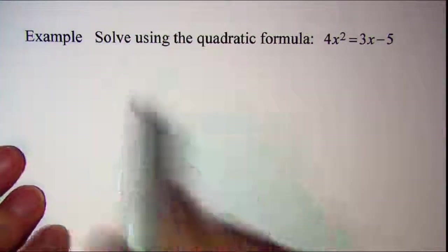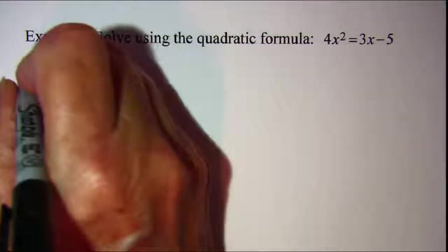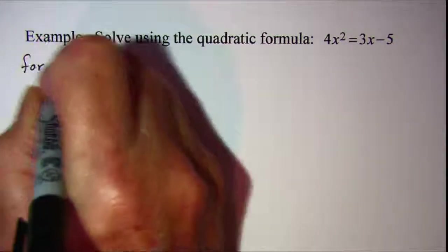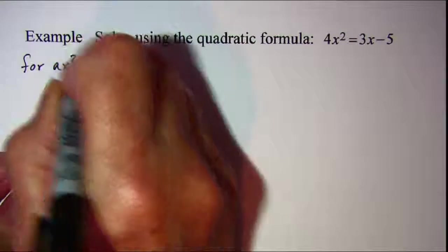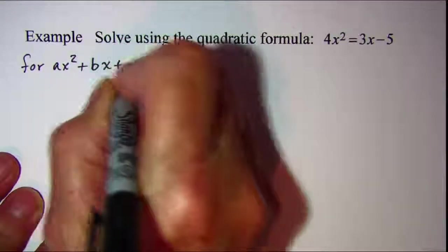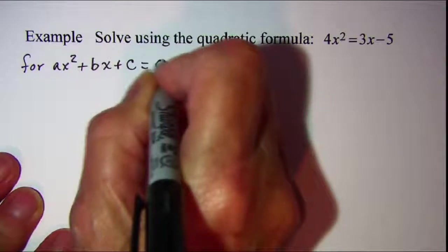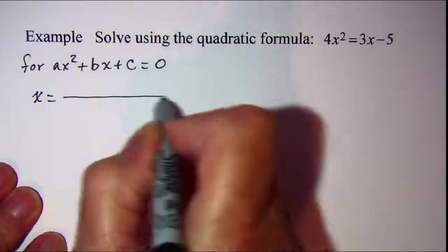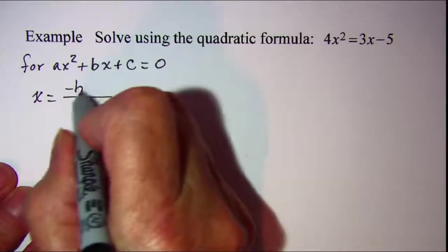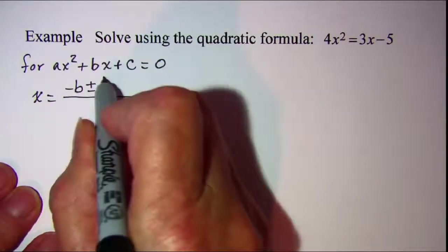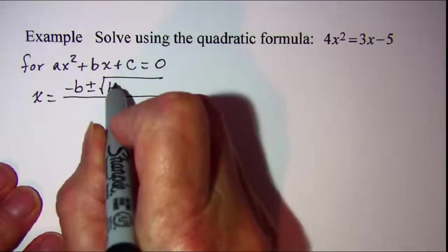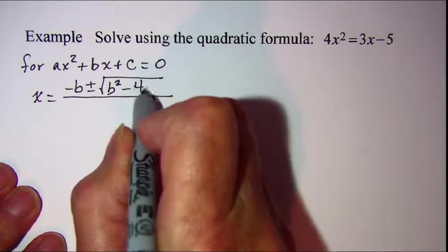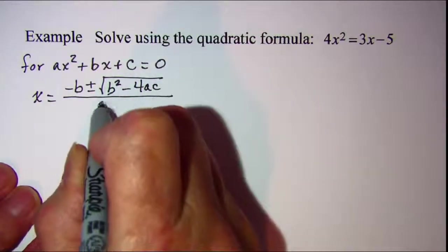Now first let me write the quadratic formula. It says for ax squared plus bx plus c equals zero, x is equal to negative b plus or minus the square root of b squared minus 4ac all over 2a.